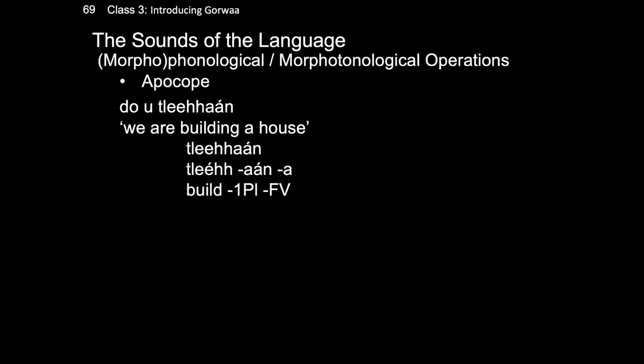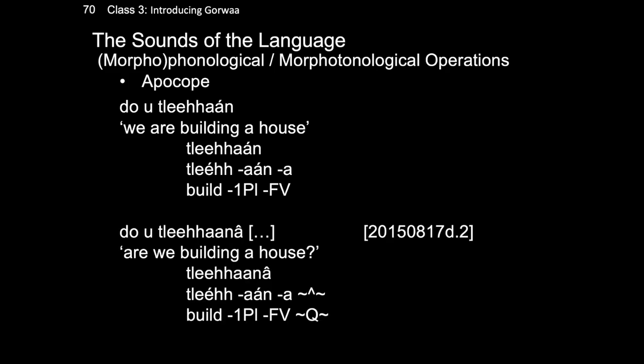We can see that the ah isn't always unpronounced — it would be silly to propose a suffix that is always invisible. Take, for example, the phrase do-u-tah-an, meaning 'we are building a house.' Note that the verb has a final ah, but again it is not pronounced. Compare this to its question form, do-u-tah-ana, where the final ah appears. Because ah is no longer the final morpheme in the word, it does not undergo apokopi and is pronounced.